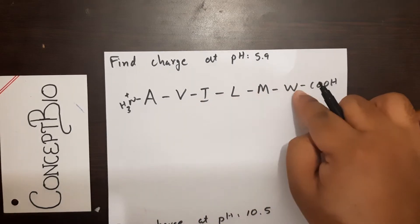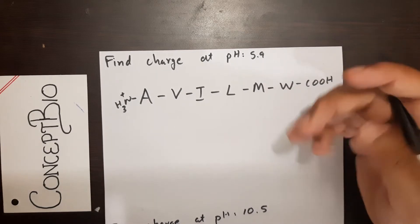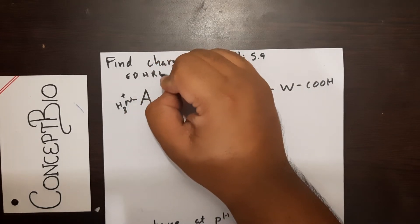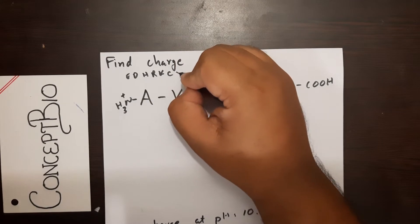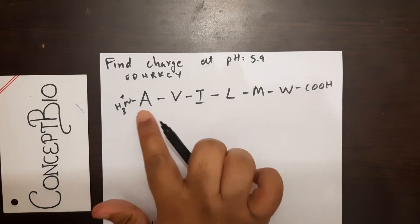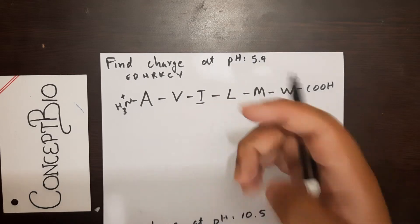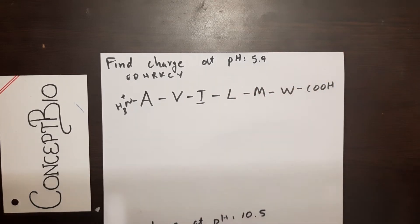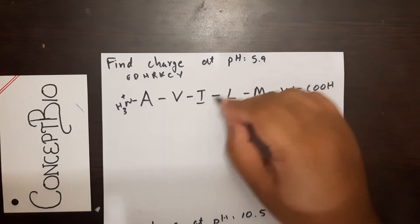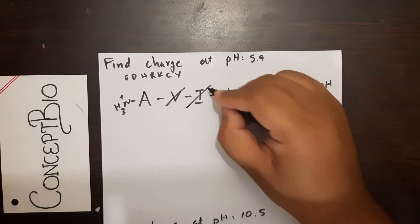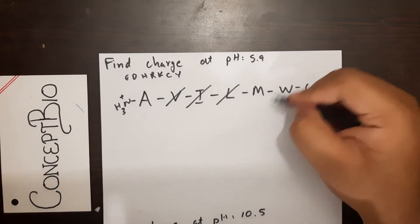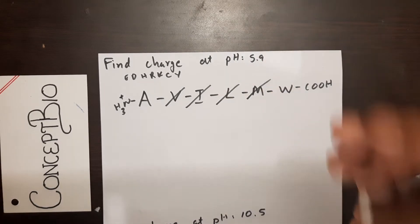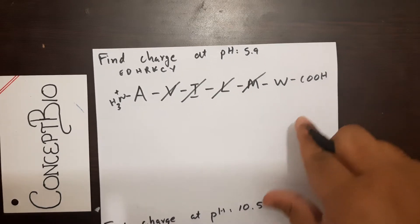The second stage is to find out any triprotic amino acids. These are E, D, H, R, K, C, and Y. If you look at the chain A-V-I-L-M, none of them are triprotic. These are all diprotic amino acids, so cancel out all the diprotic amino acids: valine, isoleucine, leucine, and methionine can all be canceled because they don't participate in this equation.